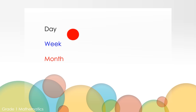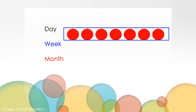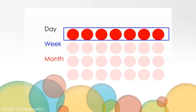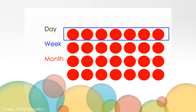This is about four weeks. This is a day. This is a week — a week is seven days. This is a month. A month is about four weeks and a month is 28 to 31 days.